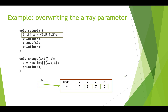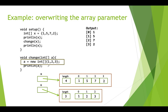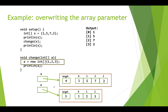Now let's look at an example where we overwrite that array parameter. This is the same set of code except we have a different line inside our change function. Again, we create our array into x, print out the output, and call change, passing in x. So now both x and a are pointing at the same array. But inside change, we have a line that says a equals new int, creating a whole new array with literal creation with three int values. So a, which was pointing at our original array, now points at this new array.